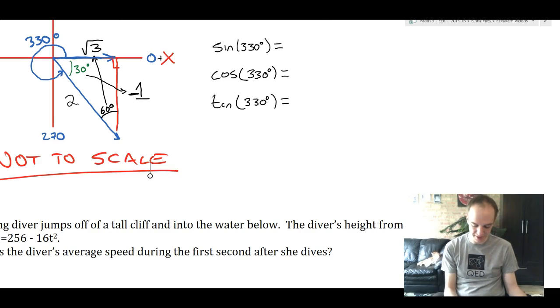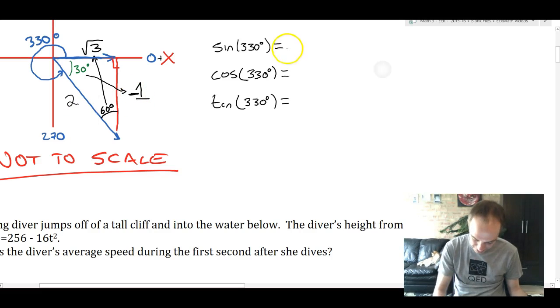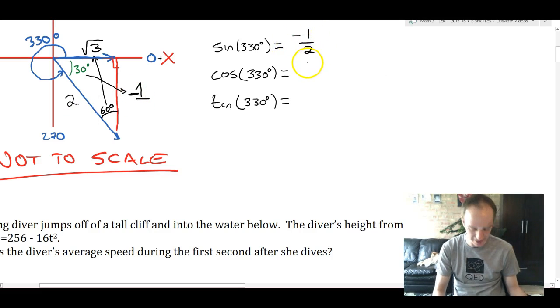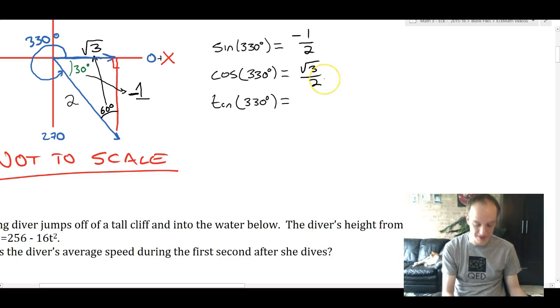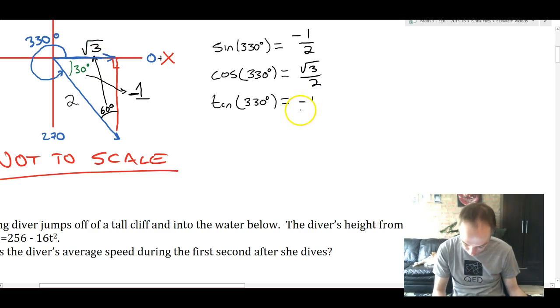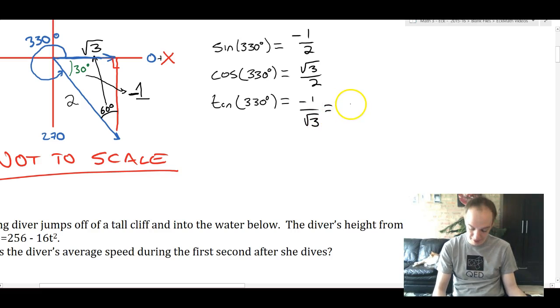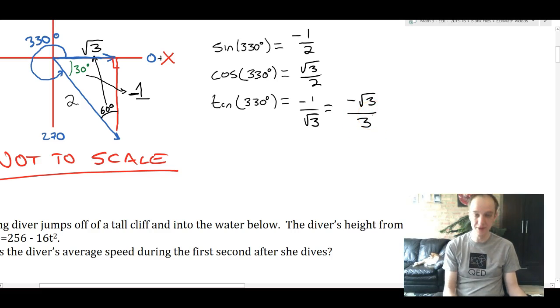I've set up my notation over here: sine, cosine, and tangent of 330. Your notation has to look like this. You have to tell me what angle you're doing and it has to be the original angle, not the little 30 degree angle. Sine is opposite over hypotenuse, so that's going to be negative 1 over 2, also known as negative 1 half. Cosine is adjacent over hypotenuse, so that's going to be square root of 3 over 2. Tangent of 330 is going to be opposite over adjacent, so that's going to be negative 1 over square root of 3, which rationalizes by multiplying by root 3 over root 3 to negative square root of 3 divided by 3.